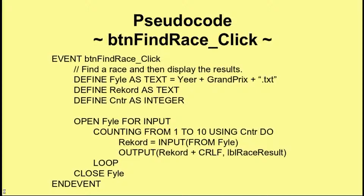The loop starts with counter at one, reads in the first record, and outputs it to label race result. Then counter becomes two, it reads in the second record and outputs that, and so on until all ten records are done. When complete, we close the file — this ensures everything is neat and tidy, because leaving open file connections wastes memory and is insecure. We end the event, and we've now defined all the code for our Formula One program — and it wasn't as complicated as you might imagine.